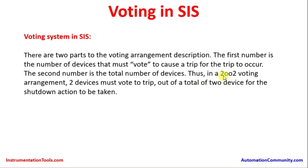The second number is the total number of devices. Thus, in a 2 out of 2 voting arrangement, both devices must vote to trip — 2 out of a total of 2 devices.